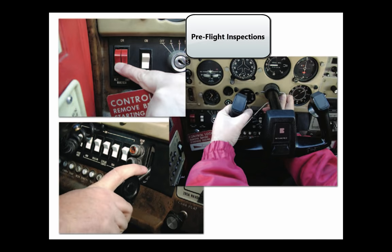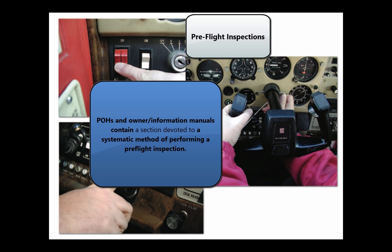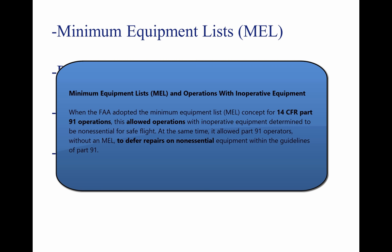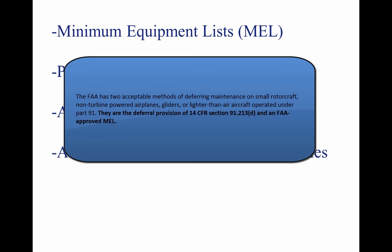Pre-flight Inspections: The pre-flight inspection is a thorough and systematic means by which a pilot determines if the aircraft is airworthy and in condition for safe operation. POHs and Owner Information Manuals contain a section devoted to a systematic method of performing a pre-flight inspection. Minimum Equipment Lists, MEL, and Operations with Inoperative Equipment: 14 CFR requires that all aircraft instruments and installed equipment be operative prior to each departure. When the FAA adopted the MEL concept for 14 CFR Part 91 operations, it allowed operations with inoperative equipment determined to be non-essential for safe flight. It also allowed Part 91 operators without an MEL to defer repairs on non-essential equipment within the guidelines of Part 91.